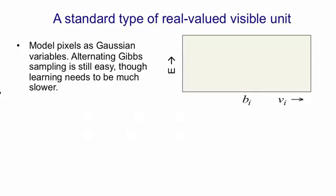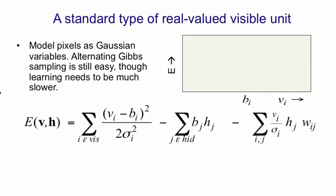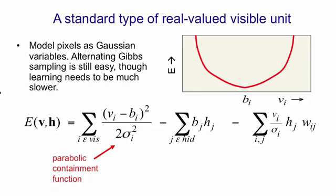The equation looks like this. The first term on the right-hand side is a kind of parabolic containment function that stops things blowing up. So the term in that sum contributed by the i-th visible unit is parabolic in shape. It looks like this.